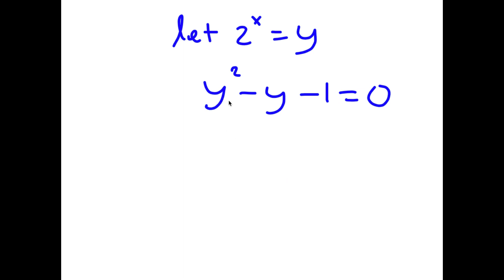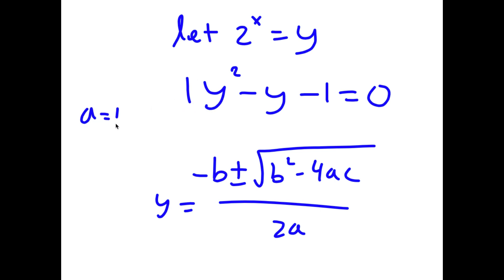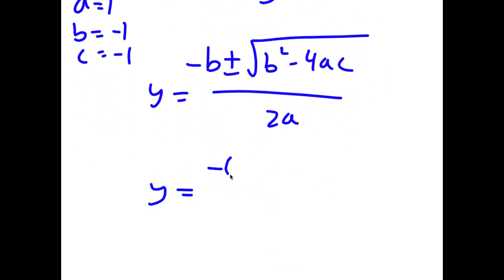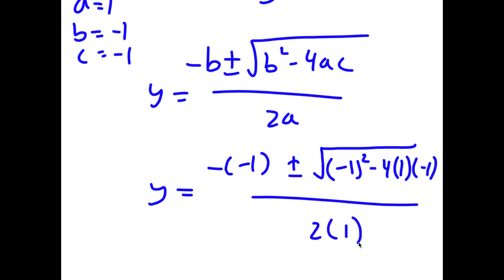Now to solve this, I'm going to use the quadratic formula, which is negative b plus or minus the square root of b squared minus 4ac all over 2a. In this case, a is equal to 1, b is equal to negative 1, and c is equal to negative 1. So I have y is equal to negative of negative 1 plus or minus the square root of negative 1 squared minus 4 times 1 times negative 1, all over 2 times 1.